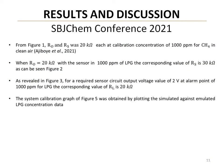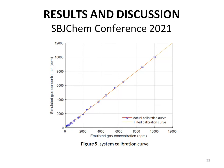From Figure 1, the value of R0 and RS was 20 kOhm each at calibration concentration of 1000 ppm for methane in clean air. When R0 equals 20 kOhm with the sensor in 1000 ppm of LPG, the corresponding value of RS is 30 kOhm as shown in Figure 2. Figure 3 shows that for a required sensor circuit output voltage of 2 volts at alarm point of 1000 ppm for LPG, the corresponding value of RL is 20 kOhm. The system calibration graph is shown in Figure 5, obtained by plotting the simulated against the emulated data.